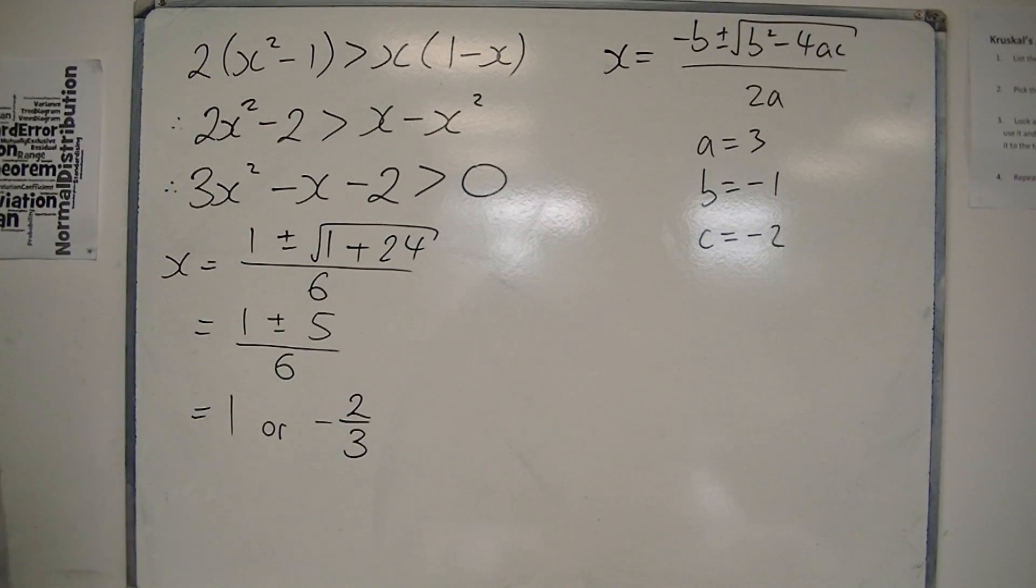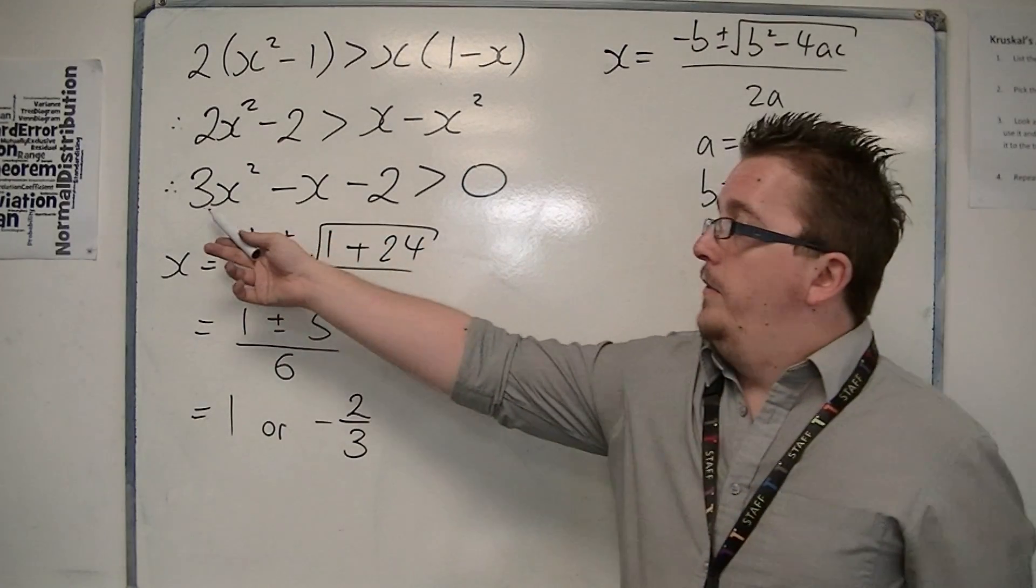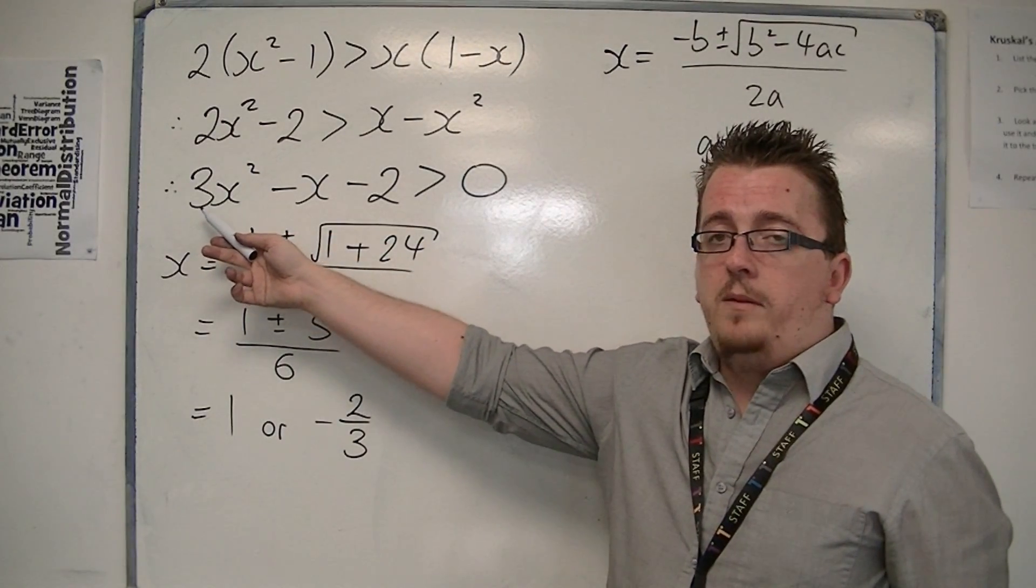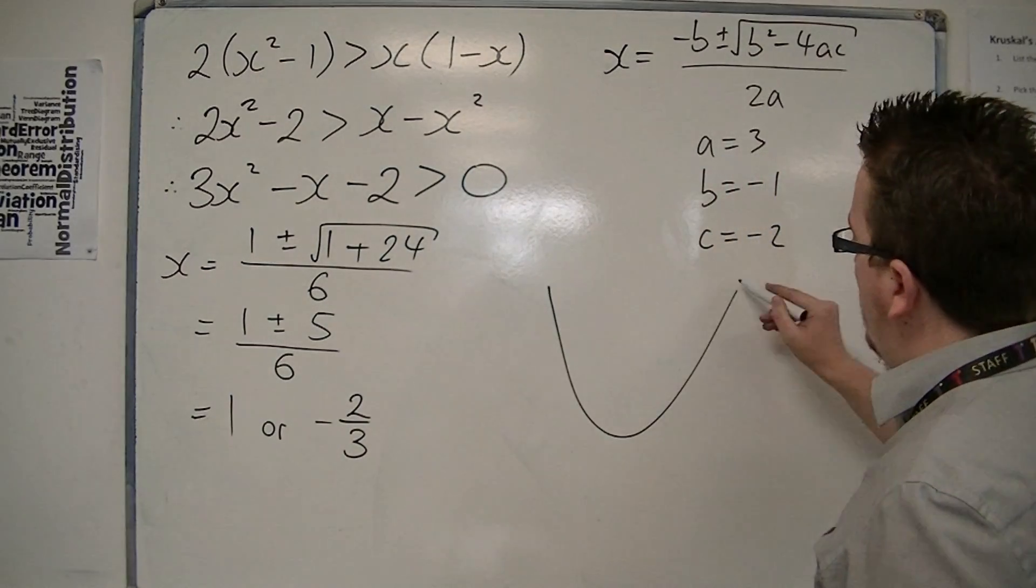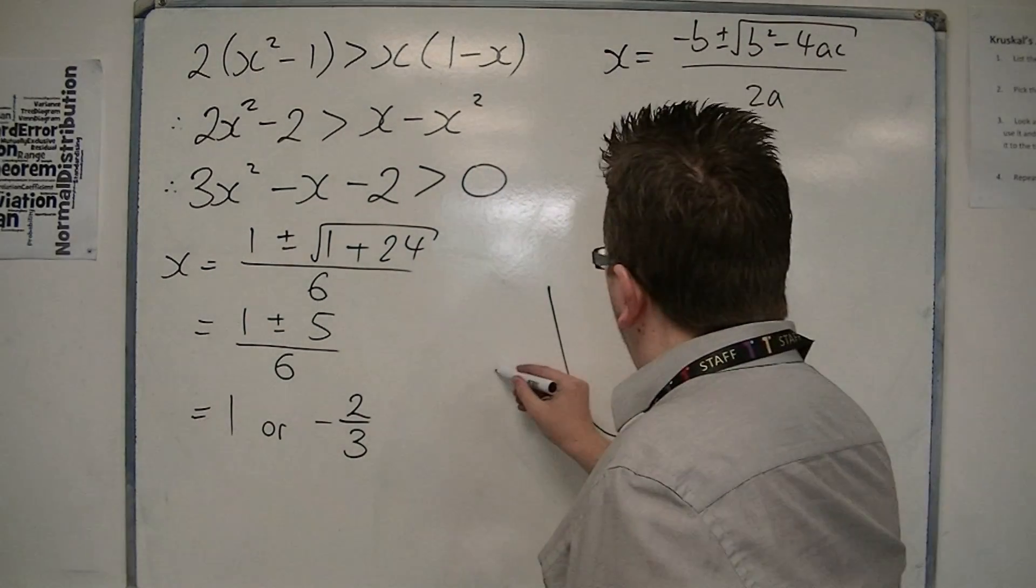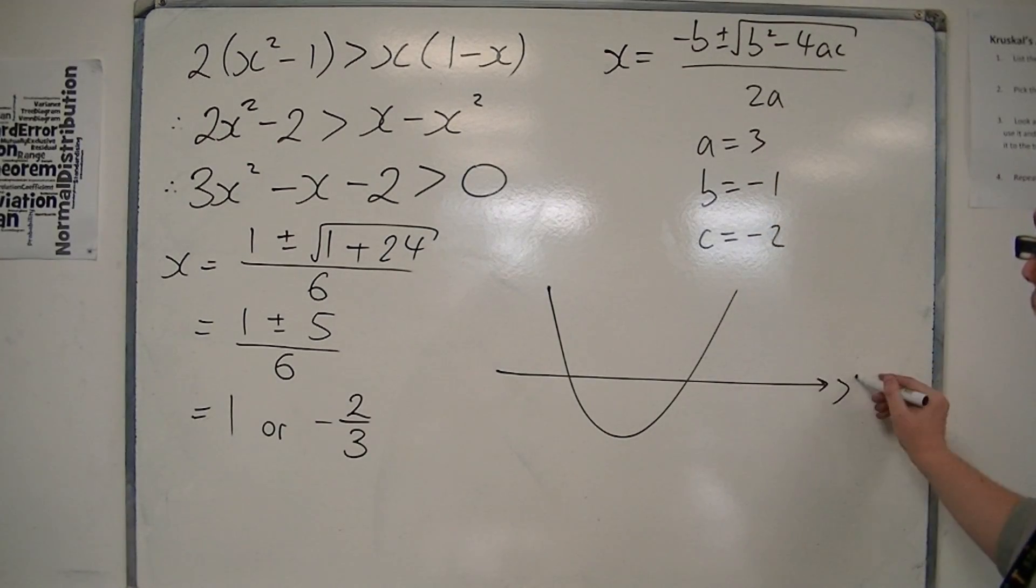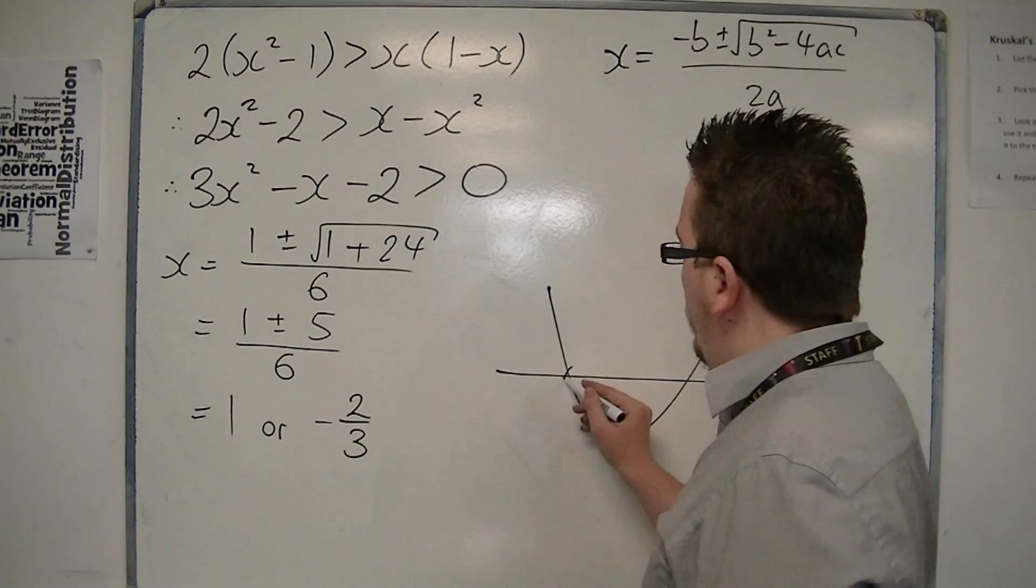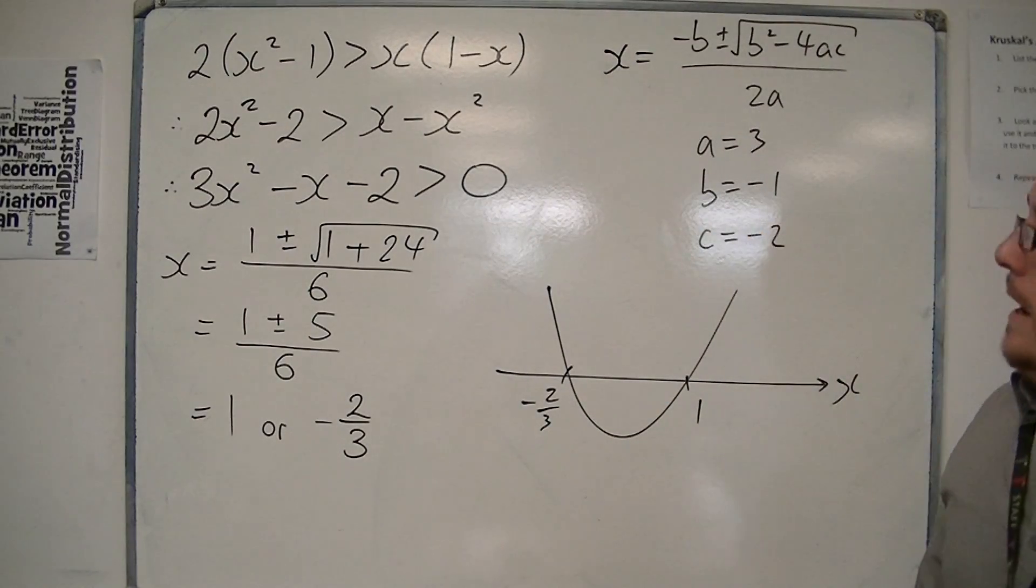This is a positive parabola because we've got a positive number in front of the x². The parabola looks like that. It intersects the x-axis at two points: -2/3 and 1, and we're asking,